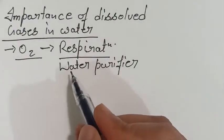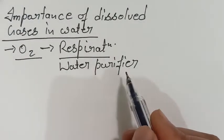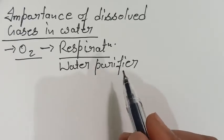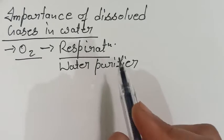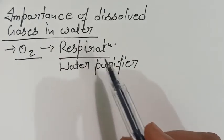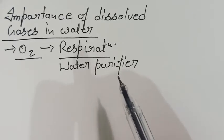And second importance is oxygen acts as a water purifier because it kills germs and bacteria and hence keeps the water fresh. So these are the two importances of dissolved oxygen: first one respiration, second one water purifier.